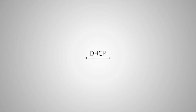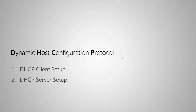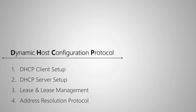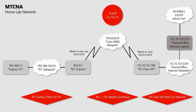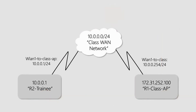We started module 2 with DHCP, or Dynamic Host Configuration Protocol, and after an introduction to DHCP we covered the relevant topics of DHCP client, DHCP server, lease and lease management, and Address Resolution Protocol. For this purpose we referred to our MTCNA home lab network for a set of practical examples.